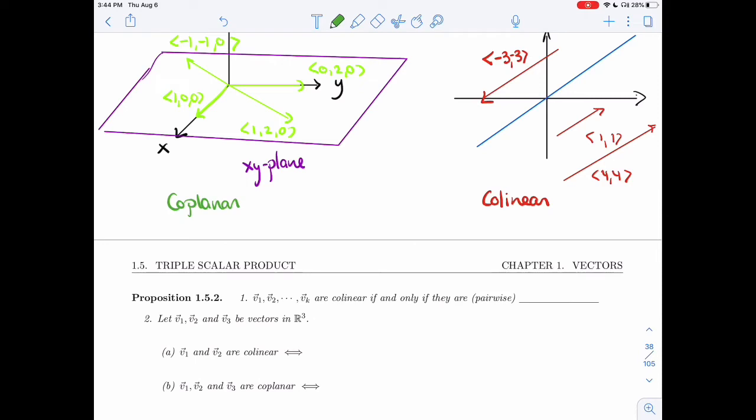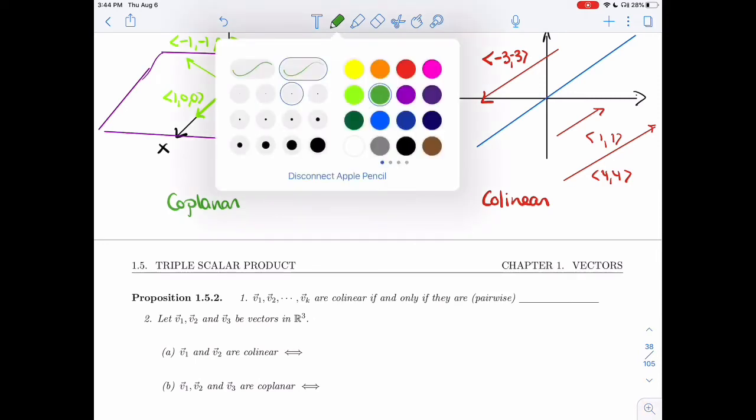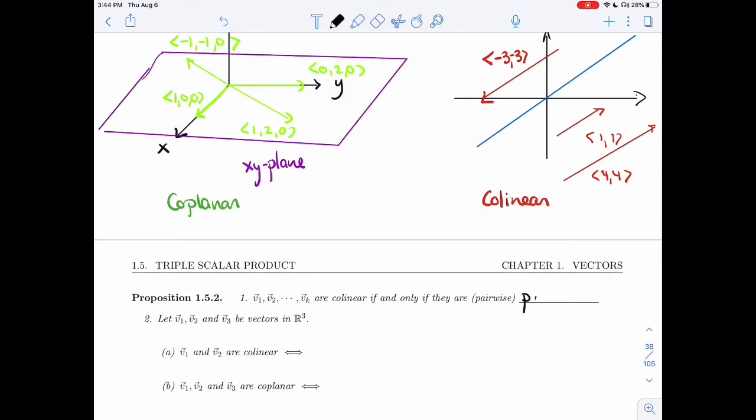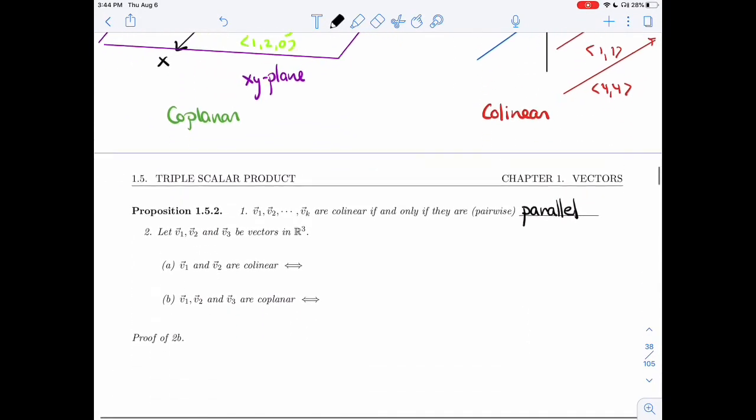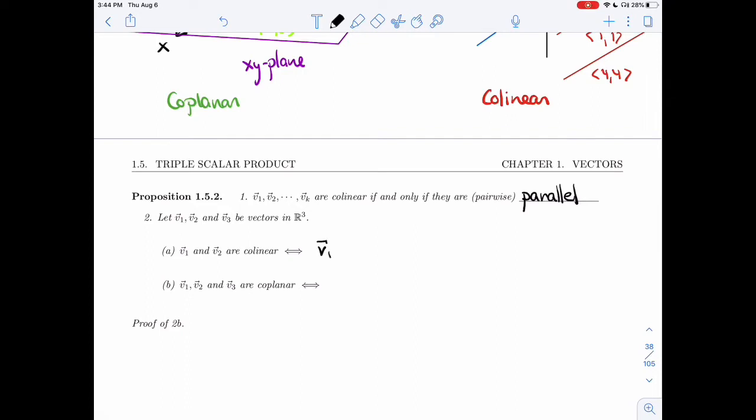So if the vectors are collinear, that means they're all parallel to the same line. So they all need to be parallel, and that's sufficient too. So vectors are collinear if and only if they are pairwise parallel. Now, if we're in R3, we have a little help from our favorite products. So V1, V2 are collinear if and only if they're parallel, so if and only if their cross product is 0.